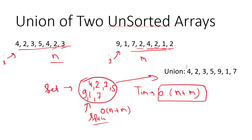That's the basic concept of how we can do the union of two unsorted arrays — just use a set and keep adding elements. If you have any doubts, please write in the comment section. If you liked the video, please like it and subscribe to the channel for more such videos. Thank you.